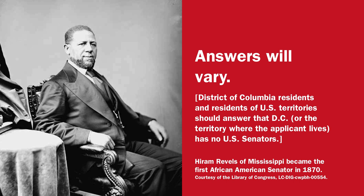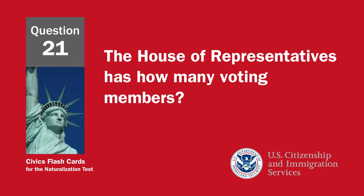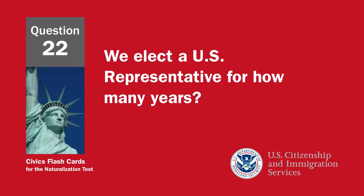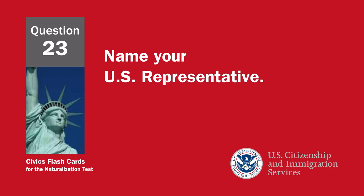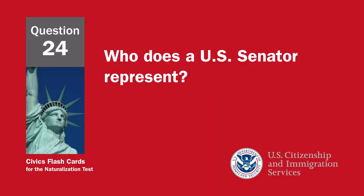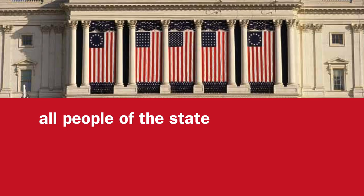District of Columbia residents and residents of U.S. territories should answer that D.C. or the territory where the applicant lives has no U.S. Senators. The House of Representatives has how many voting members? 435. We elect a U.S. representative for how many years? Two. Name your U.S. representative — answers will vary. Residents of territories with non-voting delegates may provide the name of that delegate. Who does a U.S. Senator represent? All people of the state.